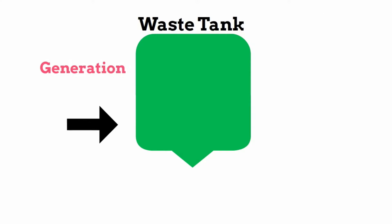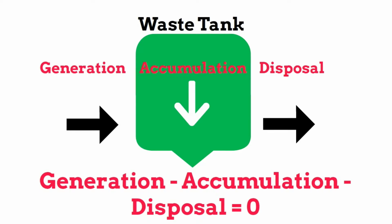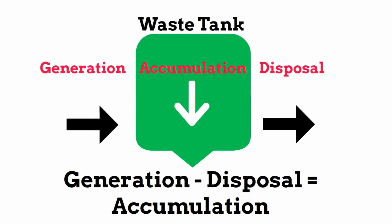Within this waste system, we have generation, accumulation, and disposal. In any closed engineering system, generation minus accumulation minus disposal equals zero. But we're solving for accumulation, which equals generation minus disposal.